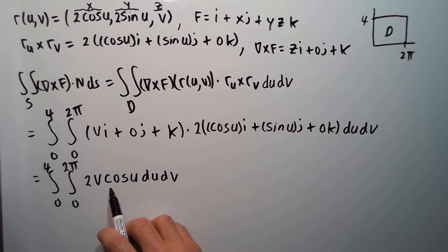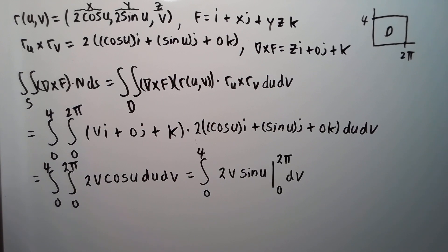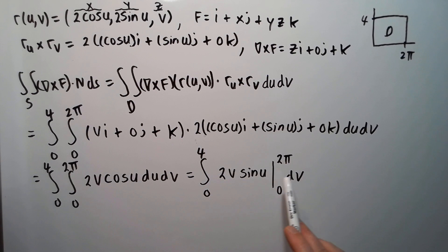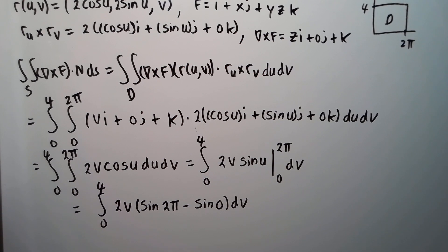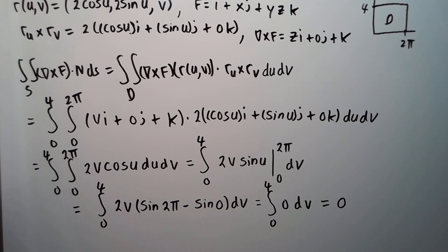Now integrating with respect to u first: integrating cosine u gives sine u, evaluated from 0 to 2π. But sine(2π) = 0 and sine(0) = 0, so the inner integral is 0. Therefore the whole double integral equals 0. We've shown that the double integral side of Stokes' Theorem is 0. In part 2, I'll do the line integral and show it also equals 0 to verify Stokes' Theorem.